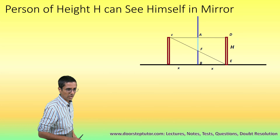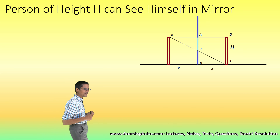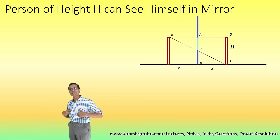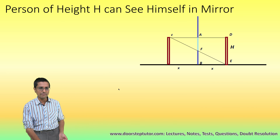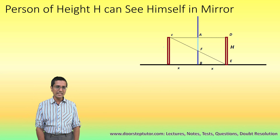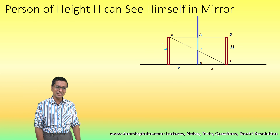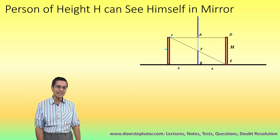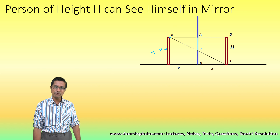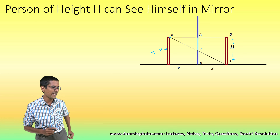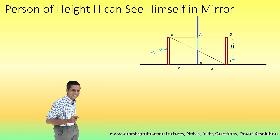This problem is solved very easily using ray optics, which means we draw the light rays. Here is the person — the eye of the person is right here, and this is person P. This person P is of height h. Because it's a plane mirror, the image in the mirror would also be at height h.